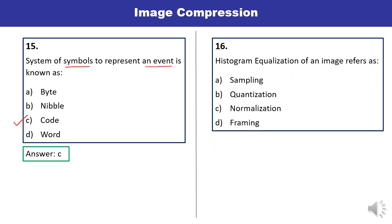Question 16: Histogram equalization of an image refers to — sampling, quantization, normalization, or framing? In histogram equalization, normalization of the image is actually being done. Let us mark C as the correct answer.